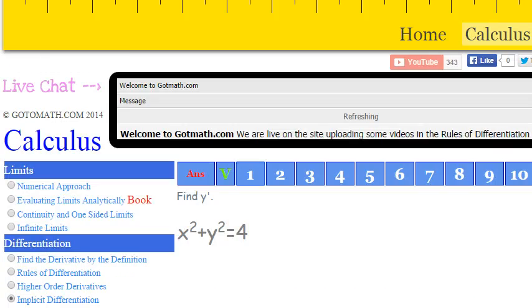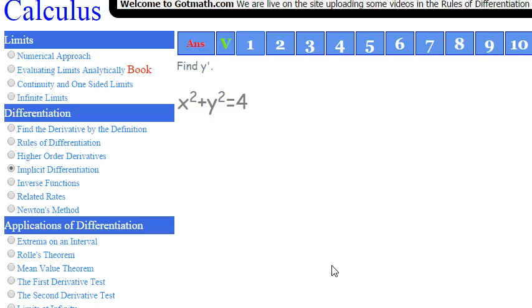We're over here at GoToMath.com working some calculus. We are doing some implicit differentiation, and we're in this section right here. It says find y prime. So we've got x squared plus y squared is equal to 4.